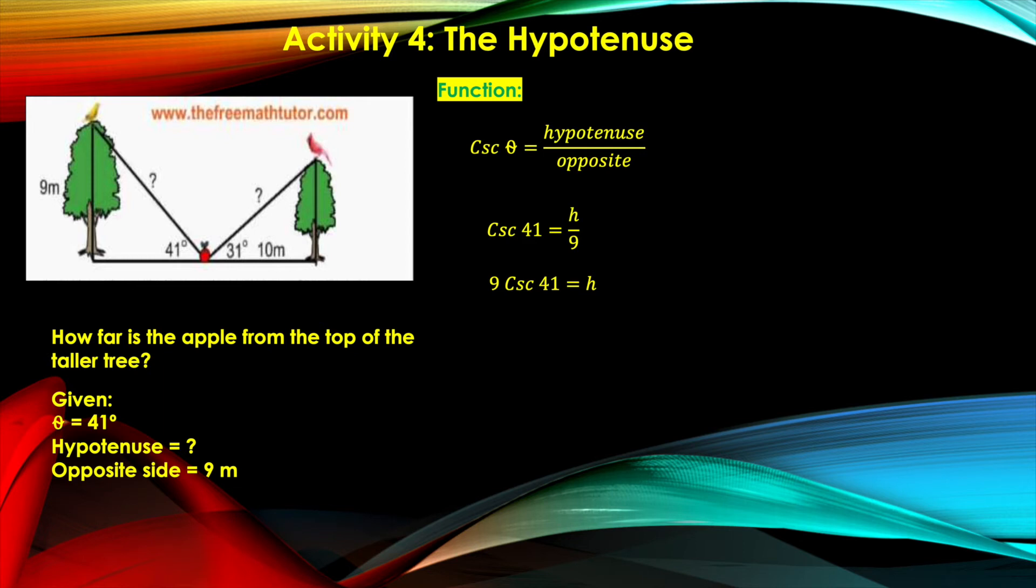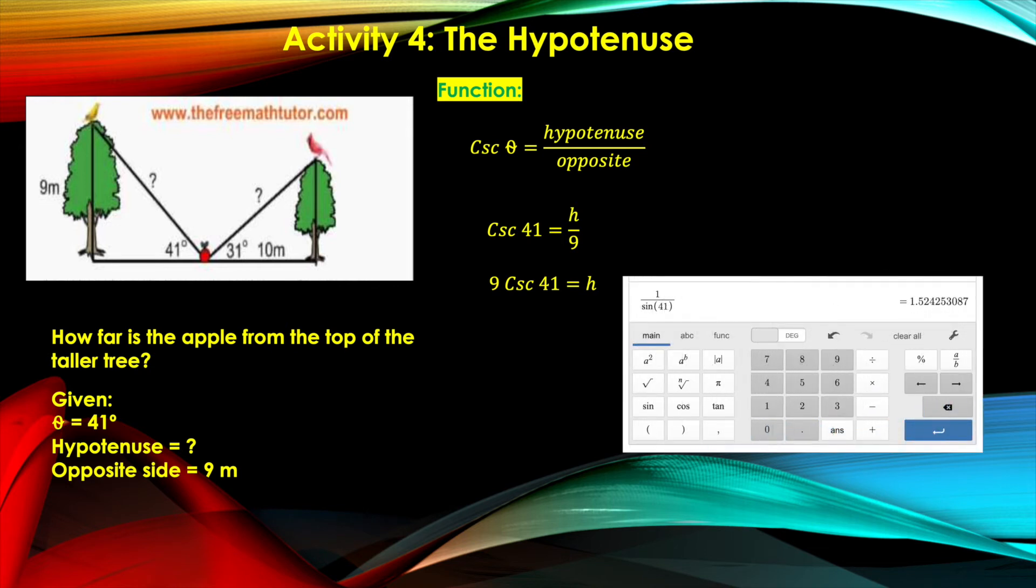Remember, in the Desmos calculator, there are only three functions and you cannot find cosec. So we are going to use the inverse of cosec, which is the sine function. How are we going to plug it in the calculator?